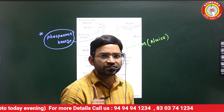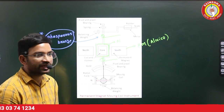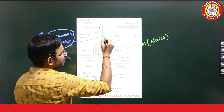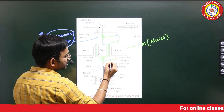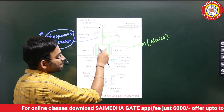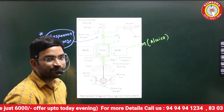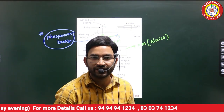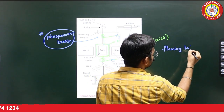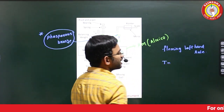In PMMC instruments, the first question is: what are springs made for? The current is supplied through the springs. The current-carrying conductor is placed under the magnetic field. What is the experience of torque and force? According to Fleming's left-hand rule, torque and force are induced.